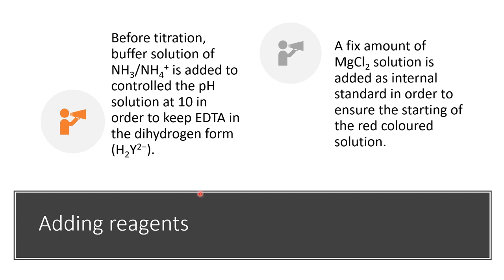You need to add other reagents to support the ions in solution for the best result. Add a buffer solution — in this experiment we use an ammonia/ammonium ion buffer at pH 10. This pH keeps the EDTA in the dihydrogen form, which reacts well with calcium and magnesium ions. You also need to add magnesium chloride solution, referred to as the internal standard, which must be added in equal amounts to every solution. This ensures the titration starts with a red color; otherwise you will never be able to find the endpoint.